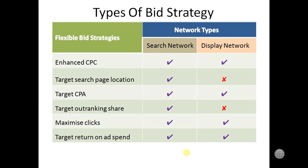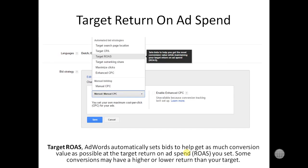In my view, if I am deciding which bidding strategy is good for our ads, it's Target Return on Ad Spend — ROAS. Why is it beneficial? Because it will automatically set our bids to help get as much conversion value as possible for our ads or AdWords. We want as much conversion value as possible, and ROAS gives us that, which is why it is more beneficial for us.